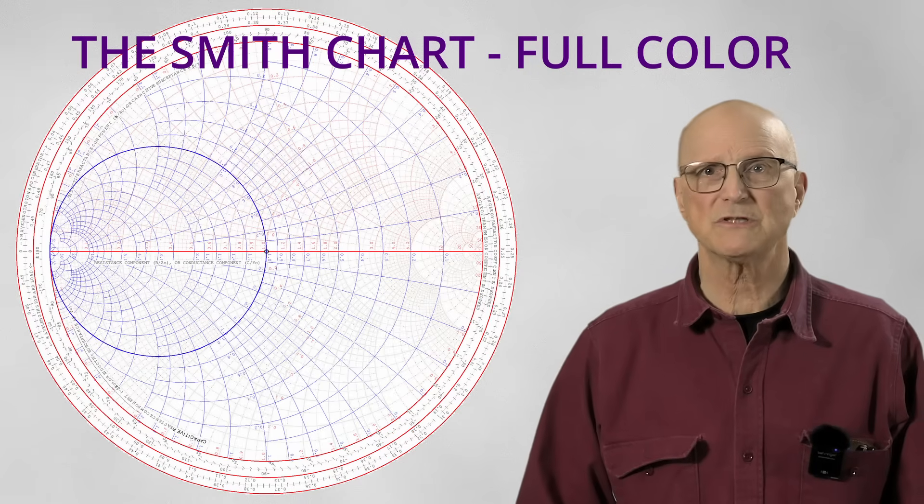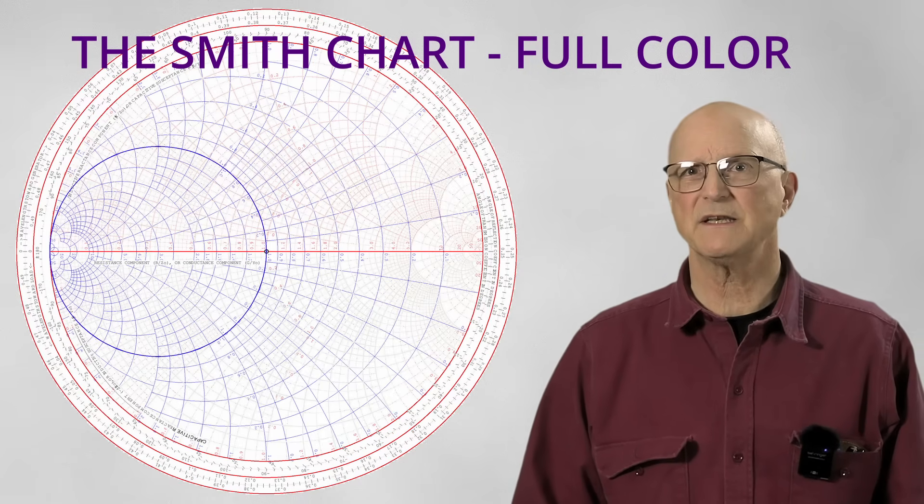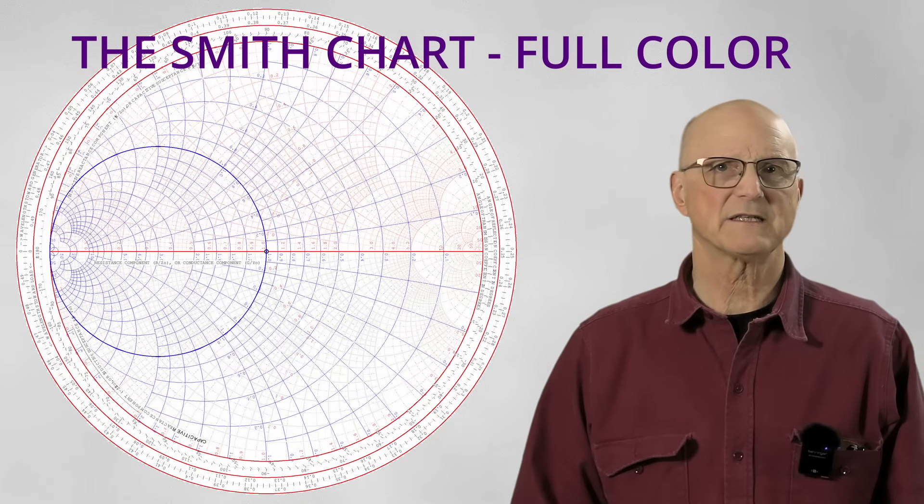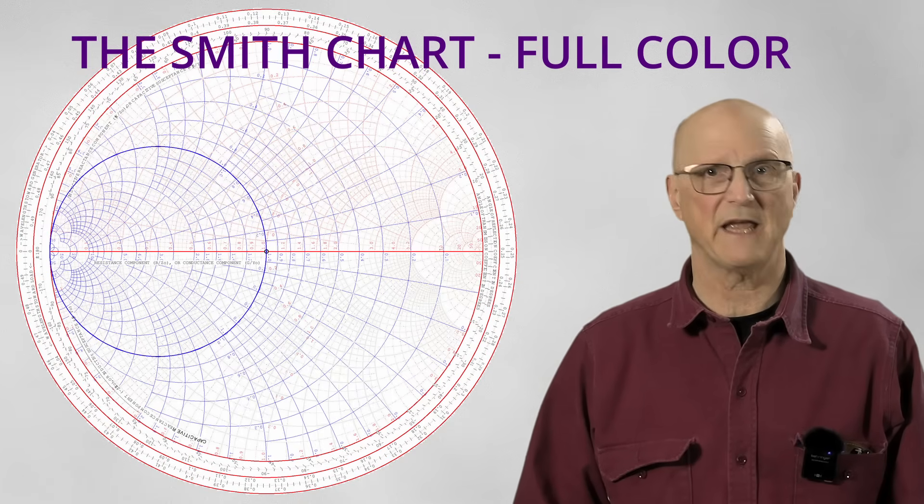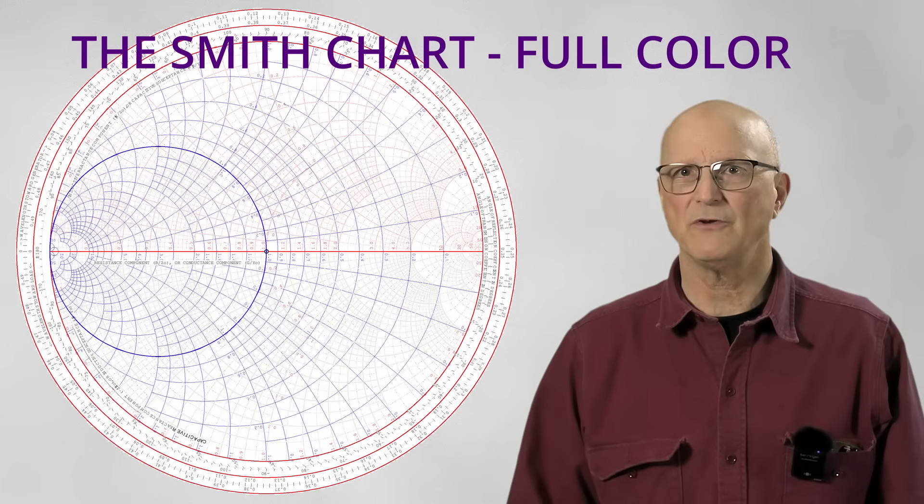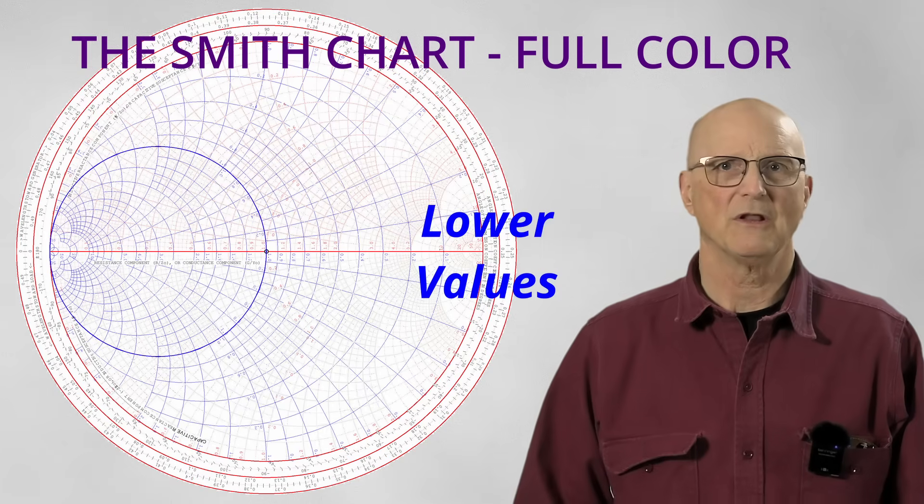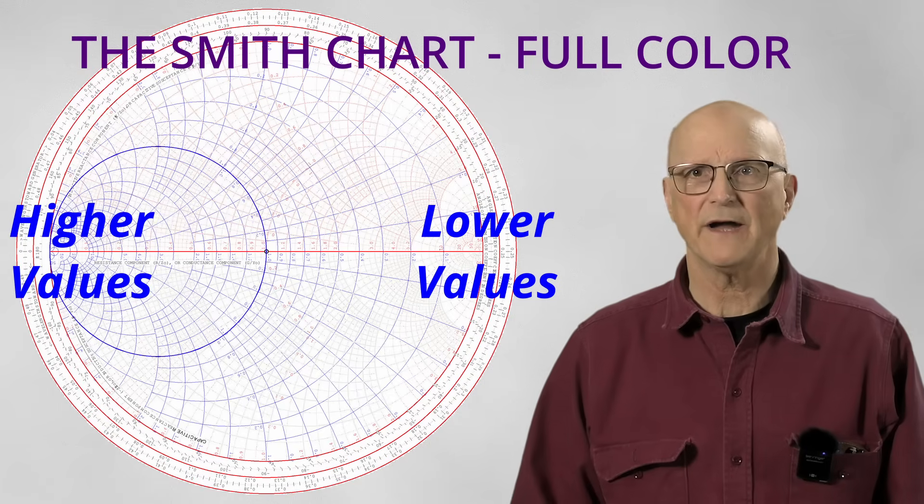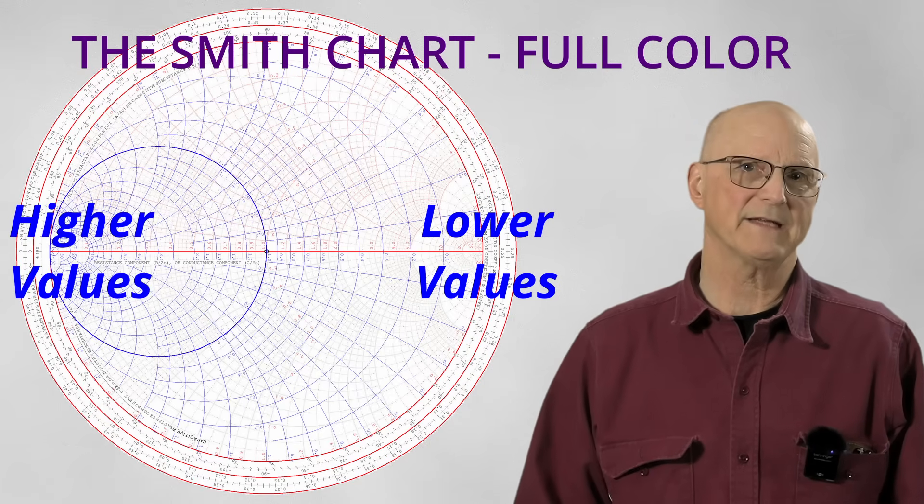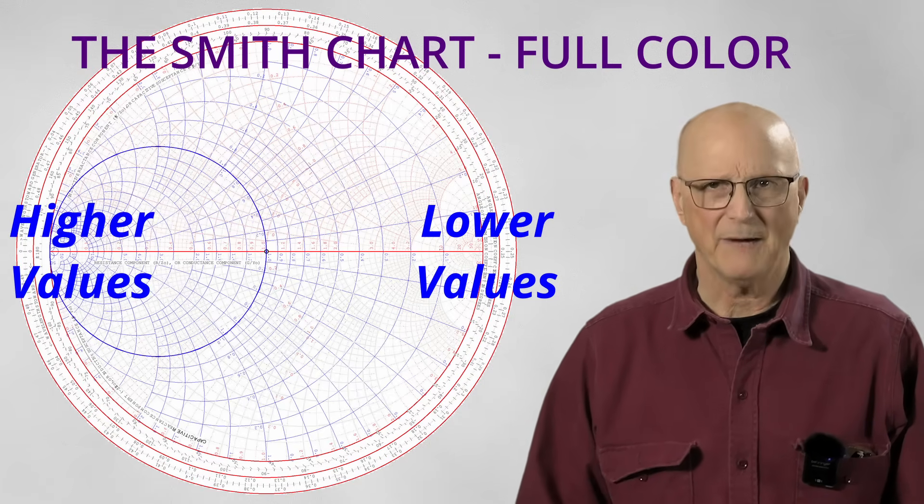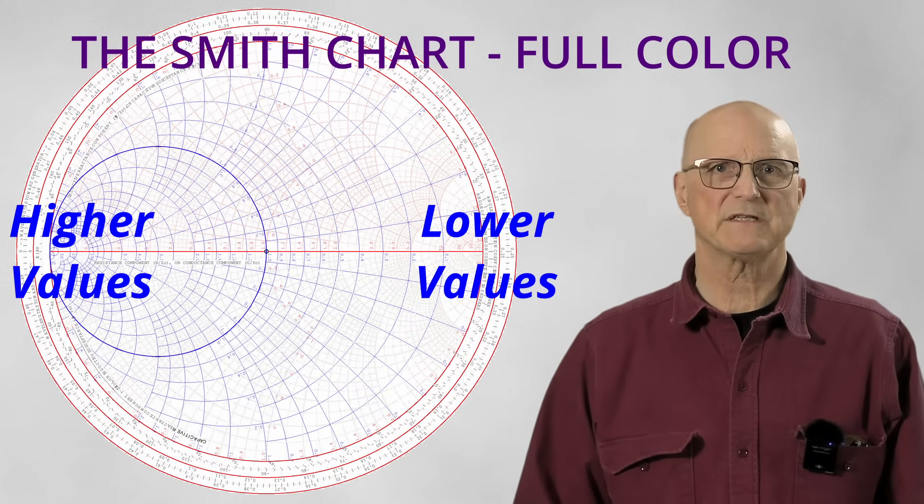You can see here the blue circles, which are the constant conductance circles. We plot normalized conductance values on these the same way we plotted normalized resistance on the resistance circles. The lower values are on the right and the higher values are on the left as displayed along the equator. This is the opposite of the impedance side of the Smith chart.